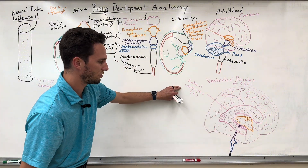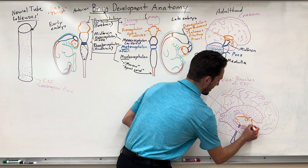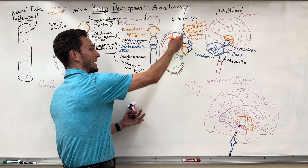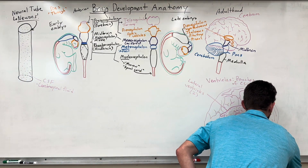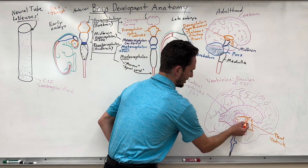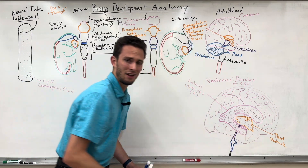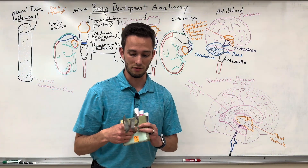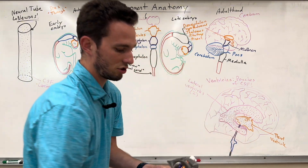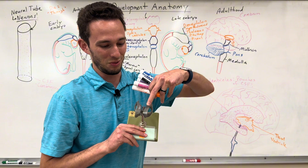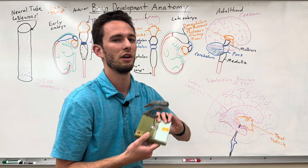Knowing we have two lateral ventricles, we name the next one the third ventricle, which sits in the diencephalon region — originally from the forebrain. It's called the third ventricle because it comes third in terms of where cerebrospinal fluid travels. Looking at a diagram: you have two lateral ventricles — one, two — and then the third ventricle deeper in. One, two, three — that's why it's called the third ventricle.